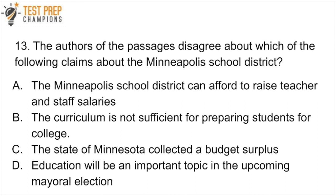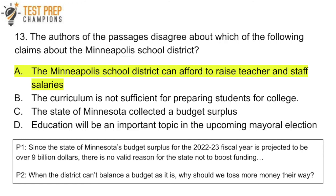Question 13: The authors of the passages disagree about which of the following claims about the Minneapolis school district? A. The Minneapolis school district can afford to raise teacher and staff salaries? B. Their curriculum is not sufficient for preparing students for college? C. The state of Minnesota collected a budget surplus? Or D. Education will be an important topic in the upcoming mayoral election? Pause the video and try to figure this out. The answer is A. In passage 1, the author argues that there's so much money in the budget surplus that there's no reason the district can't afford raises. In passage 2, the farmer argues that the district already can't balance a budget as it is — so why would we trust them with more money? The ultimate point of disagreement is choice A.